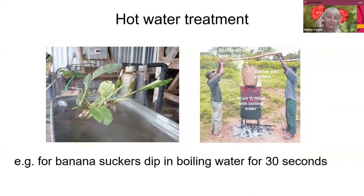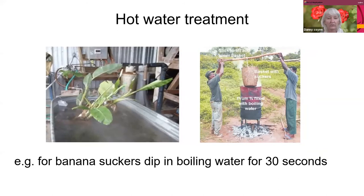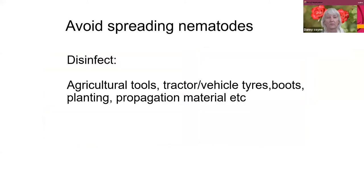Another strategy that can be useful for some plant material — for example, banana suckers — is boiling water treatment, which is kind of easy. You don't have to measure any temperature, you can use it for 30 seconds and it works well. There are also other hot water treatment recommendations for bulbs and certain other plants.